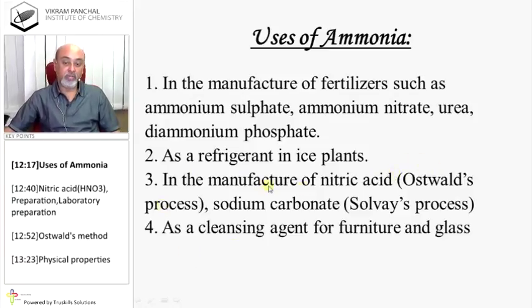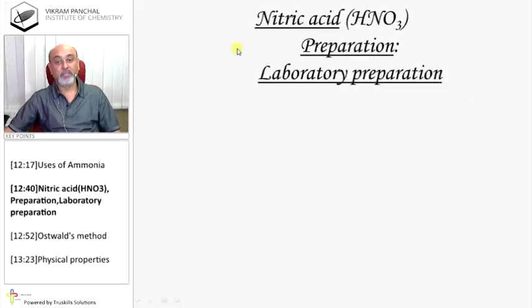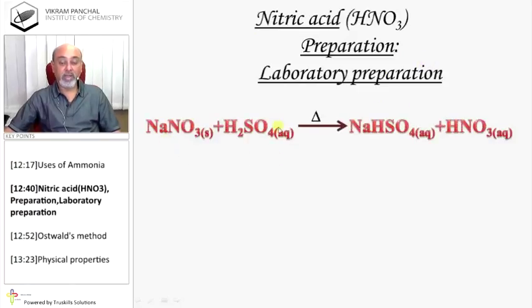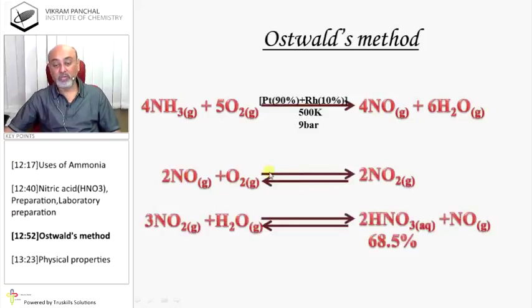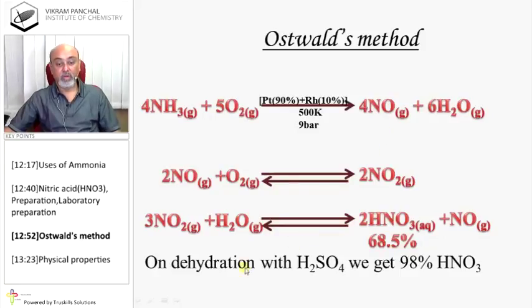Nitric acid Preparation - Laboratory preparation: Sodium nitrate reacts with H2SO4 gives sodium bisulfate plus HNO3. Ostwald's method: Ammonia on heating with oxygen gives nitric oxide and H2O in presence of catalyst platinum and rhodium. Nitric oxide when dissolved with oxygen in water gives nitrogen dioxide, then it dissolves in water and produces HNO3 which is 68.5%. On dehydration with sulfuric acid we get 98% HNO3.